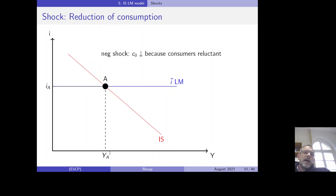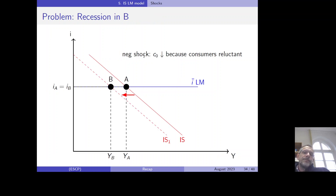Suppose a negative shock occurs — for example, consumer confidence breaks down and consumers become reluctant to spend, so the autonomous component of consumption decreases. The IS curve shifts to the left, representing a negative goods demand shock, and we reach a new equilibrium at point B. The economy ends up in a recession.